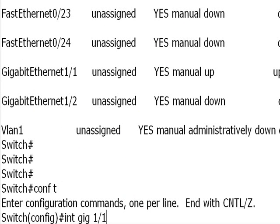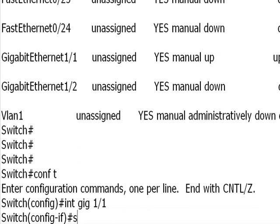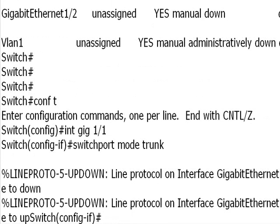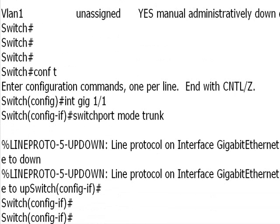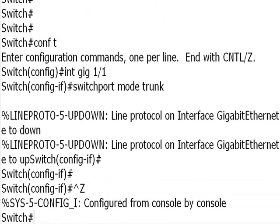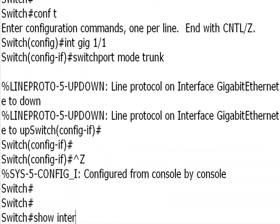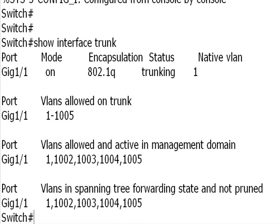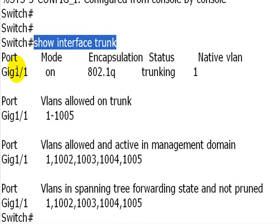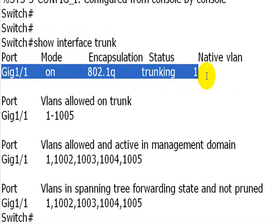I'll go into config mode, interface gigabit 1/1, and I've typed in the command switchport mode trunk. I've actually connected this switch to another gigabit port on a different switch with a crossover cable, so if you don't have that then the interface won't come up and you won't see any keepalives. I've put the interface into switchport mode trunk, and now you can see gigabit 1/1 is in trunking mode.